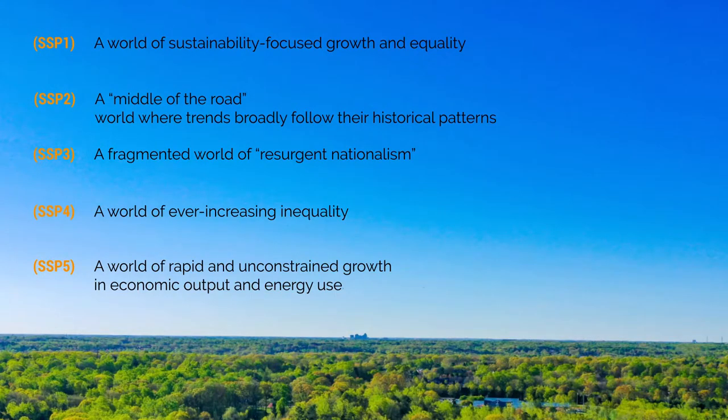The SSPs show that it would be much easier to mitigate and adapt to climate change in some versions of the future than in others. They suggest, for example, that a future with resurgent nationalism and a fragmentation of the international order could make the well below 2 degrees Celsius Paris target impossible.